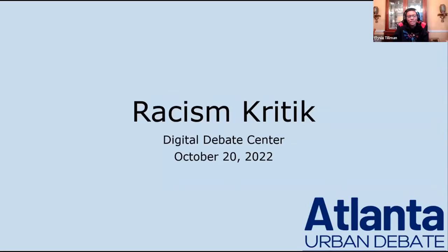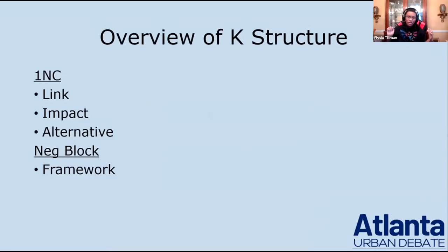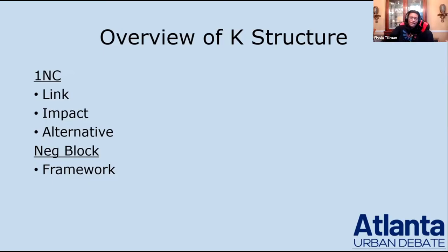Hello, thank you for joining us at this week's Digital Debate Center. Today we are going to be talking about the racism critique, which is in the middle school varsity section of the packet for answering the pandemic affirmative. The structure of this is going to be a little different from previous DDCs, where we'll talk about the overview of what a critique looks like, and then look at the one piece of evidence in the 1NC and also talk a little bit about something in the 2NC.